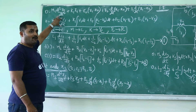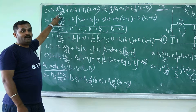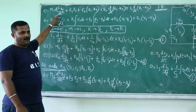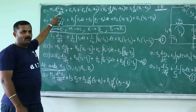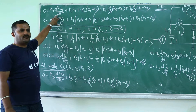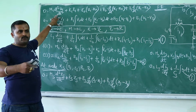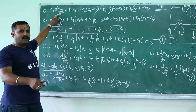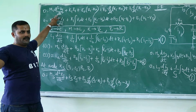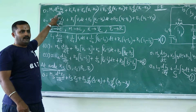Now I am writing current through the components. When I say current through the components, what is current through the inductor? It is 1 by L integration of V dt. So current through the inductor is 1 by L integration of E dt, where E is nothing but the voltage across the inductor.